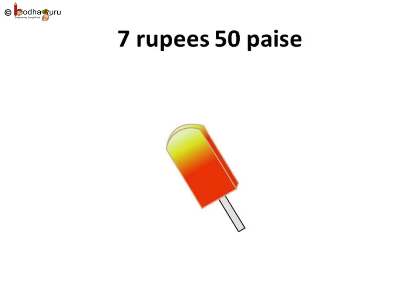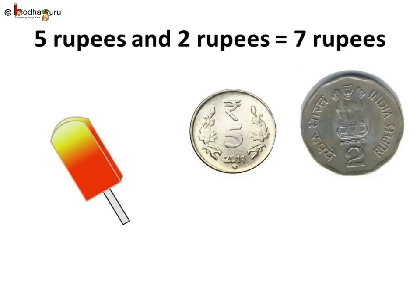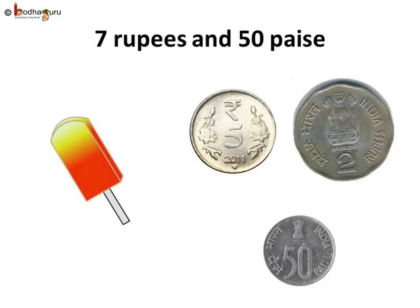Let's take another example. Let's say we want to buy an ice cream, and the ice cream costs 7 rupees and 50 paise. How would you pay the ice cream man? First, let us pay 7 rupees. We only have coins of 5 rupees and 2 rupees. So we can pay 7 rupees by using 1 five-rupee coin and 1 two-rupee coin — 5 plus 2 is equal to 7. But the ice cream is 7 rupees and 50 paise. So now we can pay 50 paise by using a 50 paise coin. So 7 rupees and 50 paise means we use 1 five-rupee coin, 1 two-rupee coin — that is 7 rupees — and 1 fifty-paise coin.